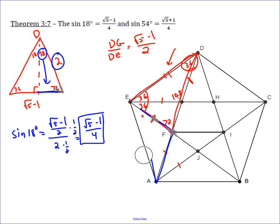And in EFA, we have 36 and 36, which makes it isosceles, and we have an altitude drawn in, and that altitude bisects the 108 degree angle. And so this is going to be 54 degrees.